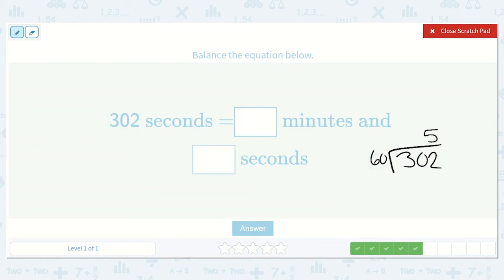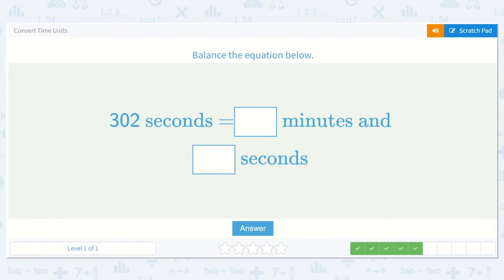So 60 times five is 300, and that makes sense because six times five is 30. So 60 times five would be 300. Then we have two left over. So we said 60 will go into 302 five times, so that would be our five minutes. And how many seconds were left over? Two. So five minutes and two seconds.